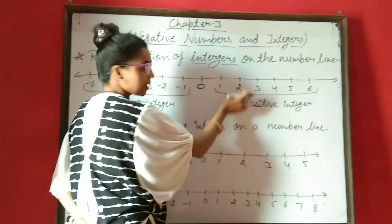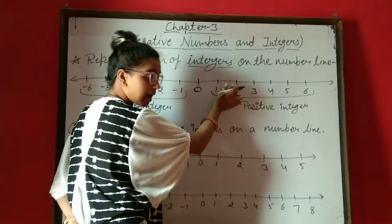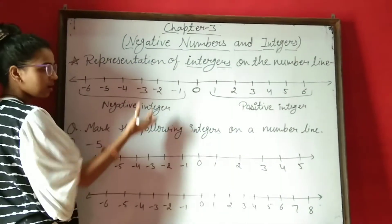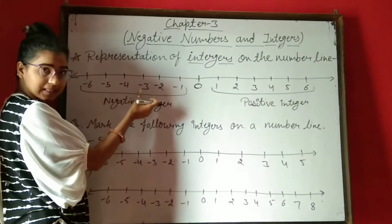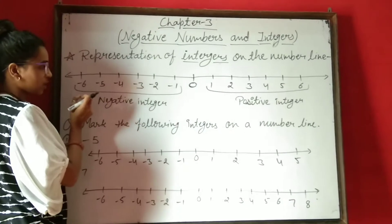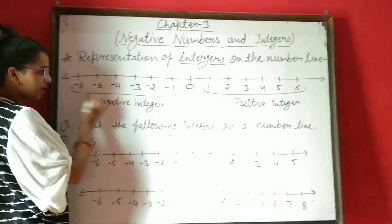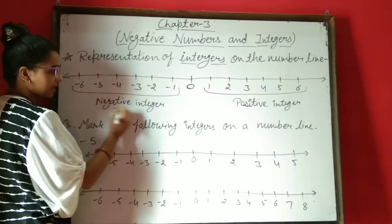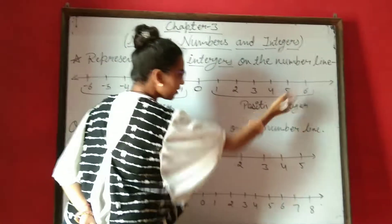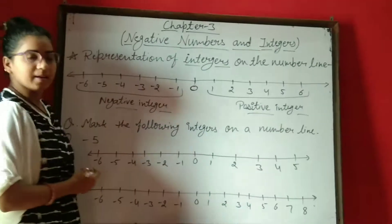Means अगर 1 का distance लेते हो तो सब में 1 का ही distance होना चाहिए, अगर 2 का लेते हो तो सब में 2 का ही distance होना चाहिए. यह जो negative numbers होते हैं, इनको बोलते हैं negative integers, और यह जो positive numbers होते हैं, इनको बोलते हैं positive integers.